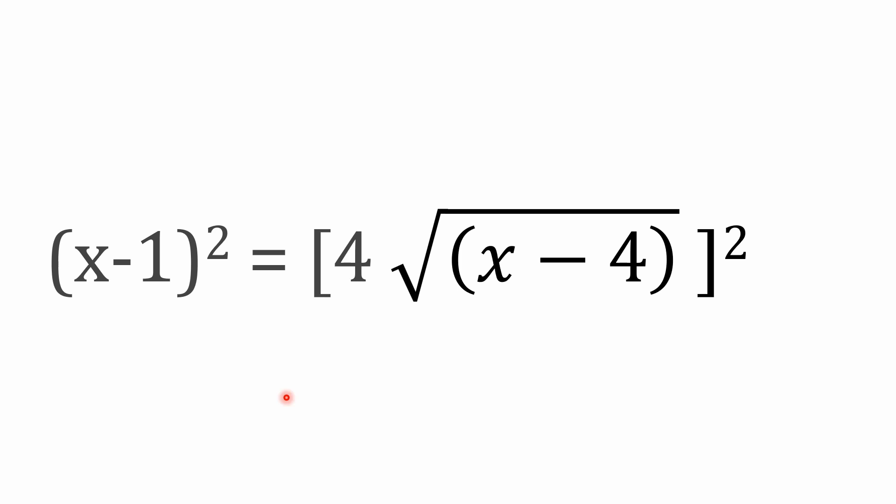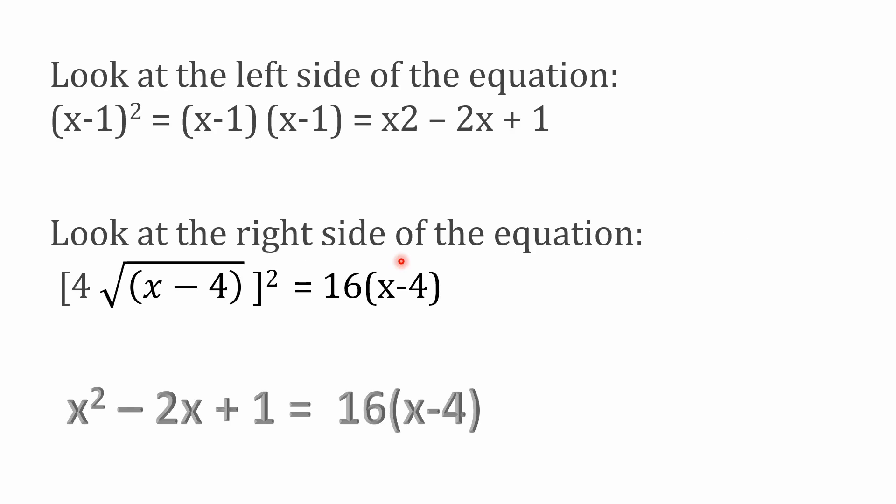Now, keep in mind, the brackets are around the 4 times the square root of x minus 4, and then we're squaring the result of that. So we're squaring the 4, and we're squaring what's in the square root. I want to make that clear. That might sound a little confusing, but let's go ahead and take a look at that.